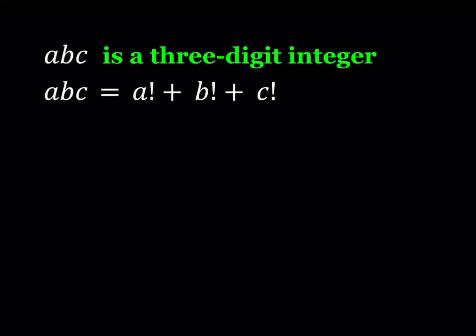Let's go ahead and try to solve this problem. When you think about factorials, obviously 9 factorial is pretty large and even 7 factorial is kind of large for this number because 7 factorial is 5040 and that is a four-digit number.